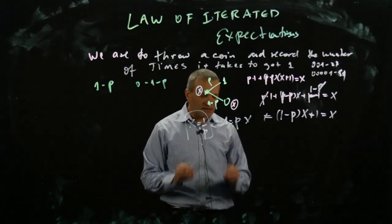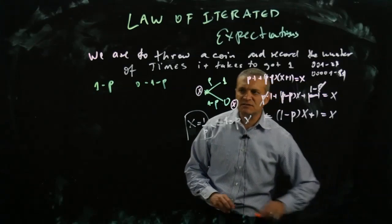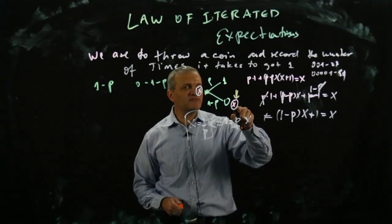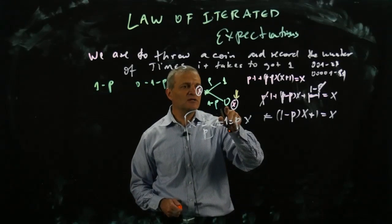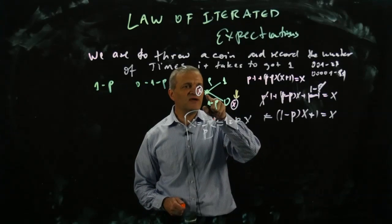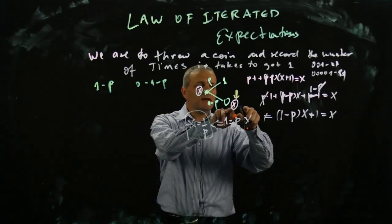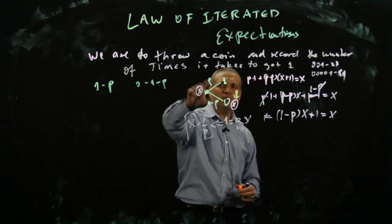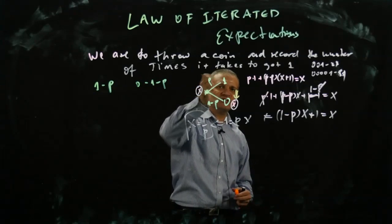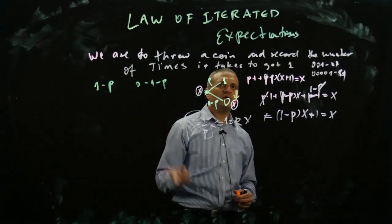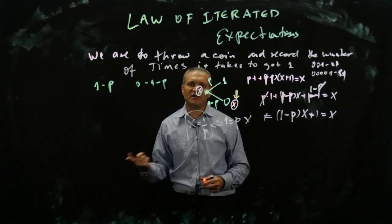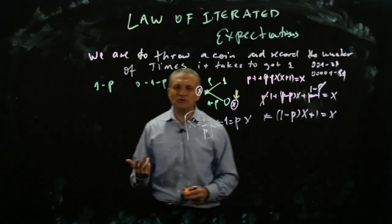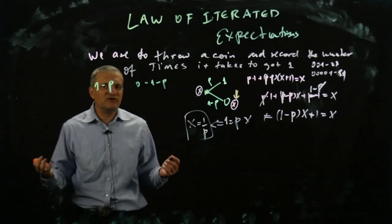This is what is called the law of iterated expectations. It's a law of iterated expectations because what you're computing is the expected value conditional on each outcome — conditional on throwing zero, the expected value resets — and then you weight those conditional expected values by probabilities. That's a very powerful technique. If you wanted to do this directly, it would look very ugly.